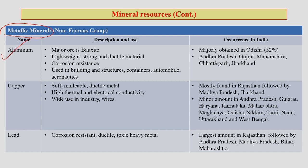Aluminum's major ore is bauxite — lightweight, strong, and used for building structures, containers, automobiles, and aeronautics. Mostly found in Odisha, followed by Andhra Pradesh, Gujarat, Maharashtra, and Chhattisgarh. Copper has high thermal and electrical conductivity, widely used for wires and electrical applications. Mostly found in Rajasthan, followed by Madhya Pradesh and Jharkhand, with some in Andhra Pradesh, Karnataka, Gujarat, Haryana, Meghalaya, Sikkim, Odisha, Tamil Nadu, and West Bengal.